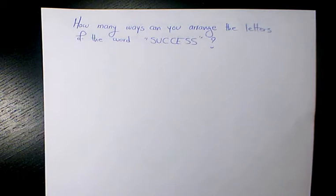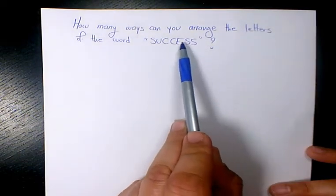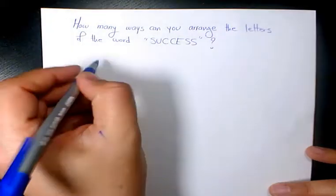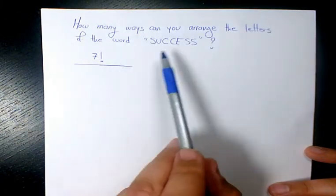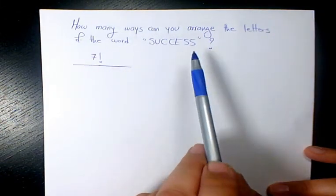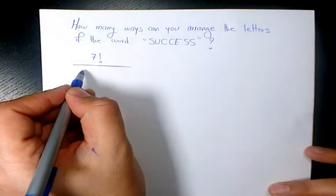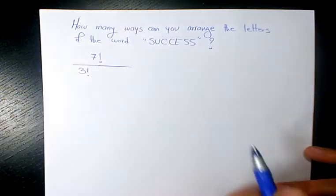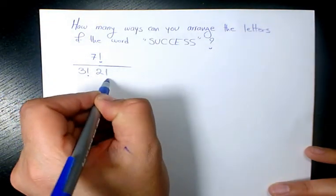So the first thing I need to do is count how many letters I have. One, two, three, four, five, six, seven - so we have seven letters, seven factorial. But here we need to divide it by something. Why? Because we have some repeating letters. As you see here, S appears three times, so we need to divide it by 3!. And C is repeating twice, so divided by 2!.